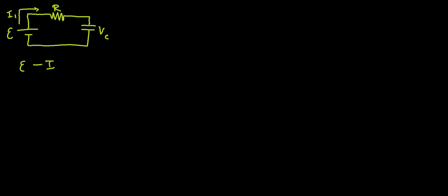We're going to write Kirchhoff's loop. We're going to have epsilon minus I1R minus V sub C equals 0. We know I1 is going to be proportional to the charge changing across the capacitor, which is going to be positive dQ/dt, because the charge is increasing as time passes.